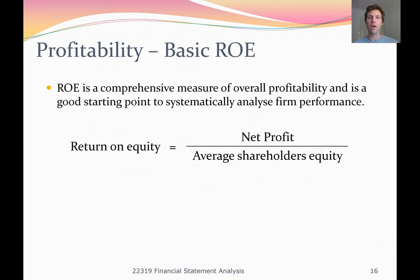Our first ratio is return on equity. Return on equity starts with a very simple formula: we take the net profit of a firm and divide by average owner's equity. This is something you'll have seen in introductory accounting subjects, and it's a common way of measuring return on equity. We can use this to evaluate whether a company is earning a return higher than its cost of capital, and it can be quite useful as a tool.